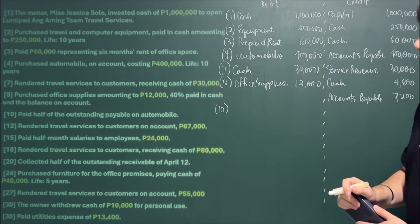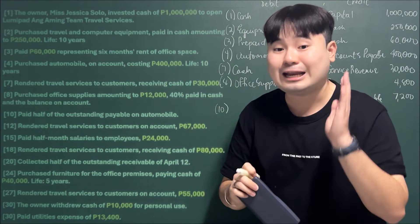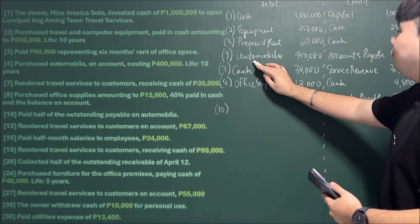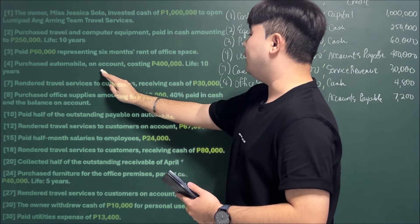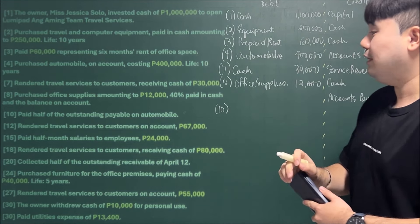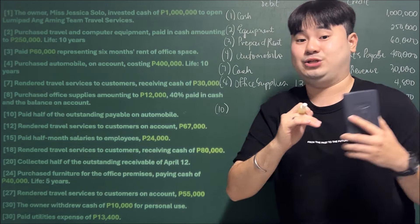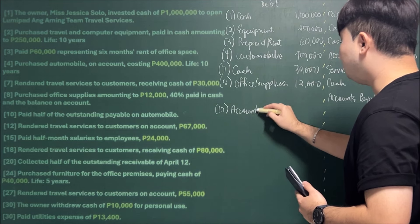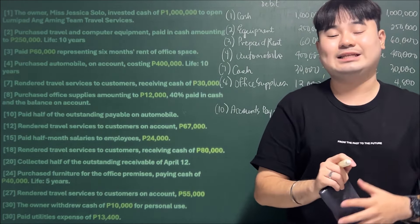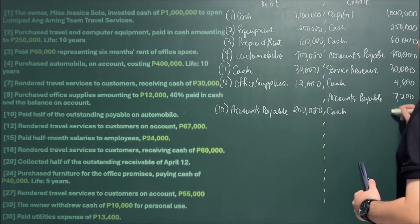April 10: Paid half of the outstanding payable on the automobile. The automobile was bought on account for 400,000, so the outstanding balance is 400,000. Half of that is 200,000. Since the liability is decreasing, we debit Accounts Payable for 200,000. Since we're paying cash, we credit Cash for 200,000.